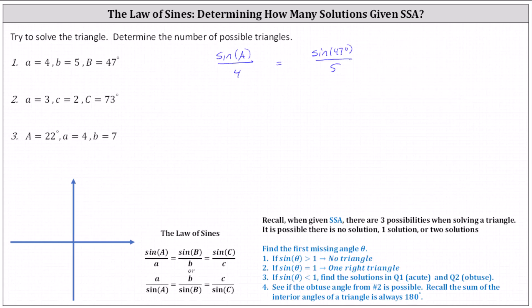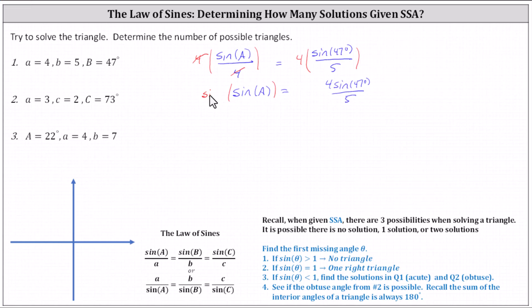Next, we solve for sine A by multiplying both sides by four. Simplifying, we now have sine A equals four sine 47 degrees divided by five. And now to solve for A, we take the inverse sine of both sides of the equation. On the left, inverse sine of sine A equals A, so A equals inverse sine of four sine 47 degrees divided by five.